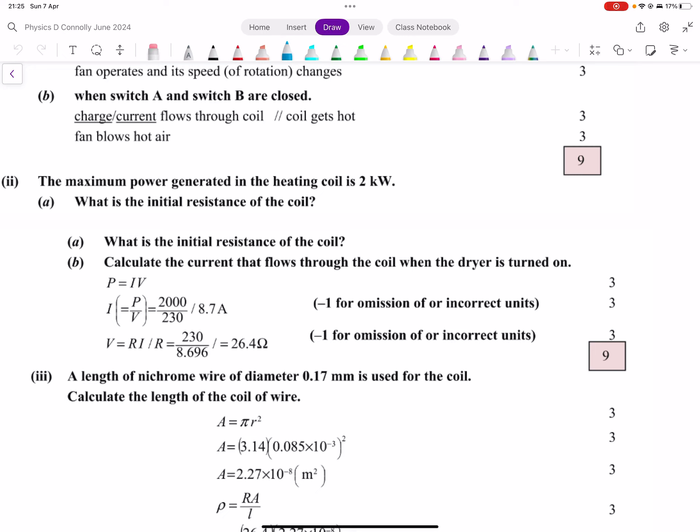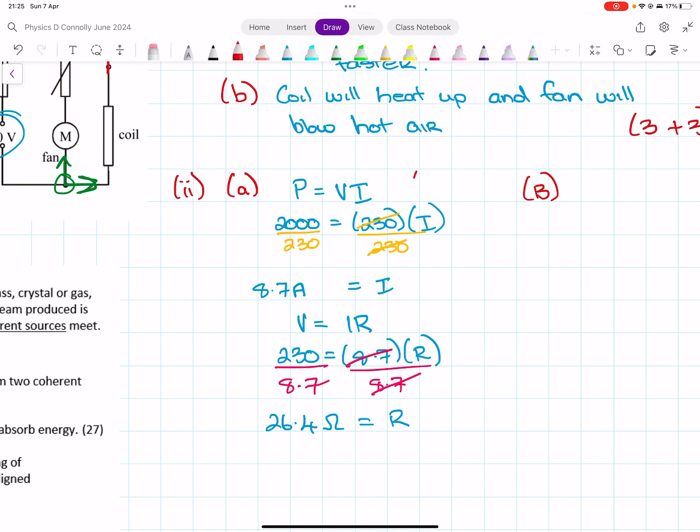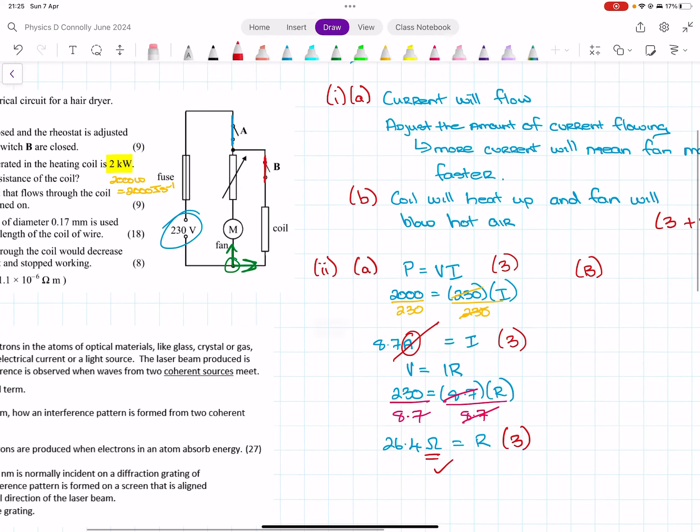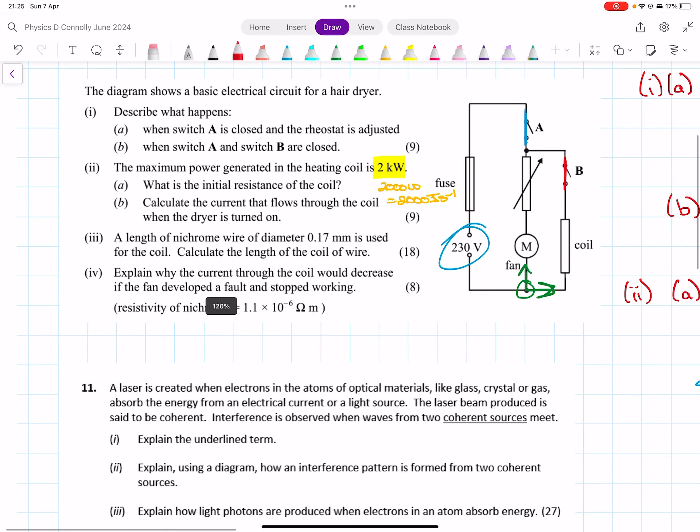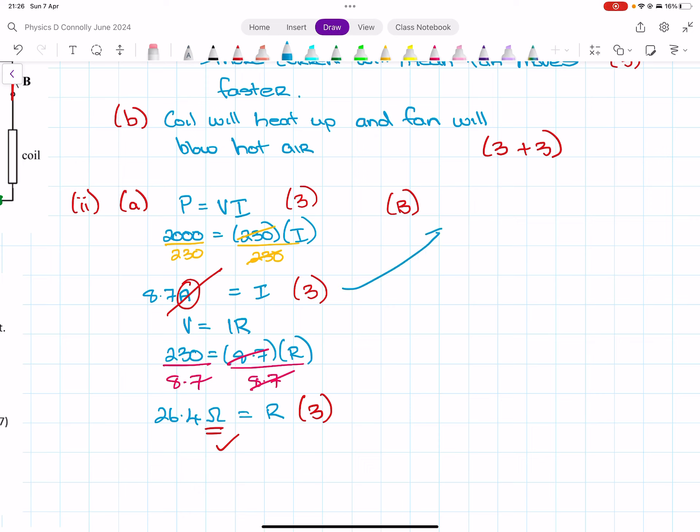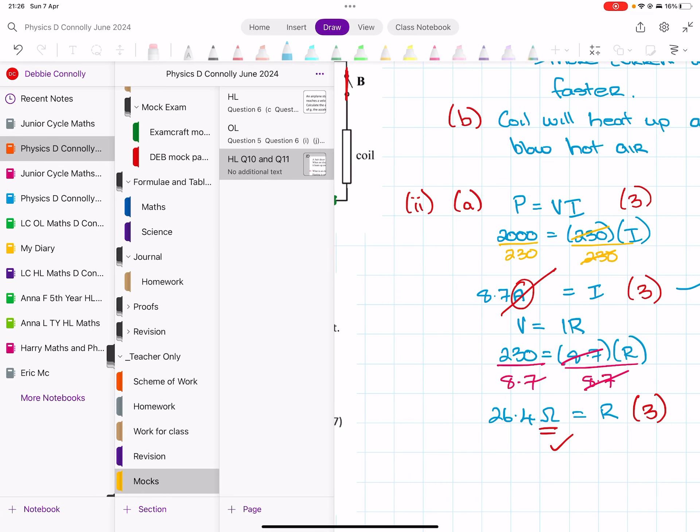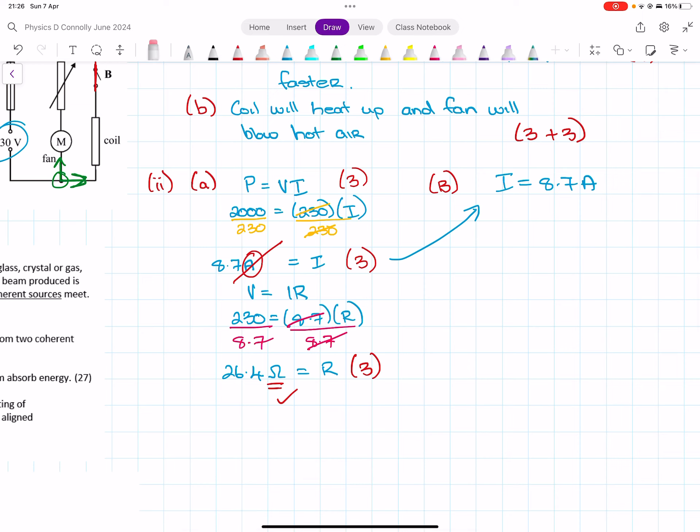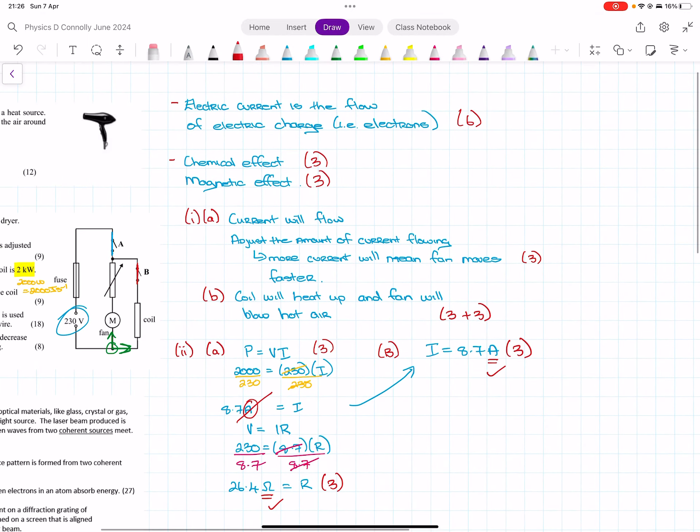I'll actually look at this properly now. Oh, you did need to do both. 26.4 is right. So three, three, and three for that—three for your formula, three for 8.7 (the marking scheme says you need these units, you definitely don't mid-answer), and three for the final answer with units. Calculate the current that flows with the coil when the dryer is on—is that why they're giving it four marks? It's such a bad question. So then the current is 8.7 amps.